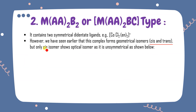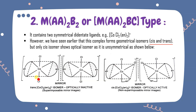Only the cis isomers show optical isomers because they are unsymmetrical. For the trans isomer, if you take the mirror image it is exactly the same and superimposable, so it is optically inactive. The cis isomer is optically active. So among geometrical isomers of MAA₂B₂ type, only cis isomers are optically active.